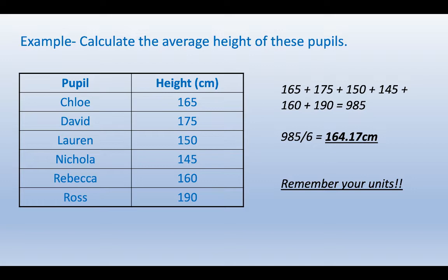Let's try an example. Calculate the average height of all these pupils: Chloe, David, Lauren, Nicola, Rebecca and Ross. I've added up all the numbers and got 985. We have six numbers representing the six pupils, so I divide by six. That gives us 164.17 centimeters. Always remember your units. In terms of rounding in biology, we're not too precious about it unless the question specifies. A general rule is to go to two significant figures.